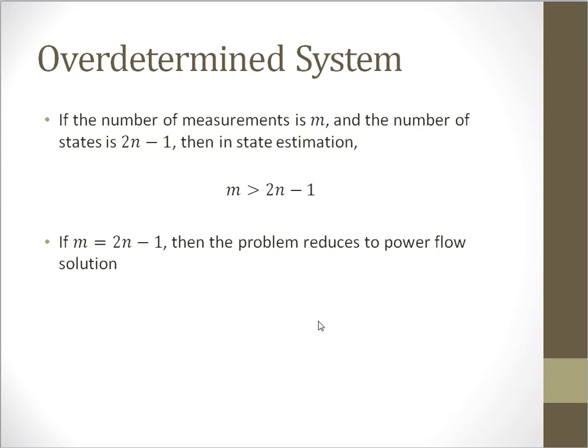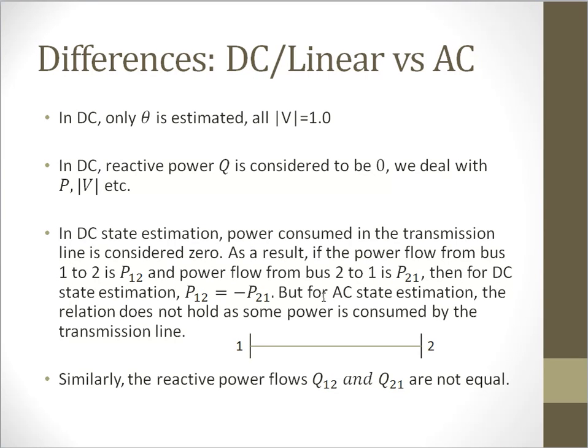What are the differences between DC or linear state estimation and AC or nonlinear state estimation? In DC state estimation, only the phase differences are estimated. All voltage magnitudes are considered to be 1. Under this case, the reactive power Q becomes 0, and we collect the real power, the voltage magnitude, and some other measurements. We do not collect the reactive power in DC state estimation. The power consumed in the transmission line is considered to be 0.